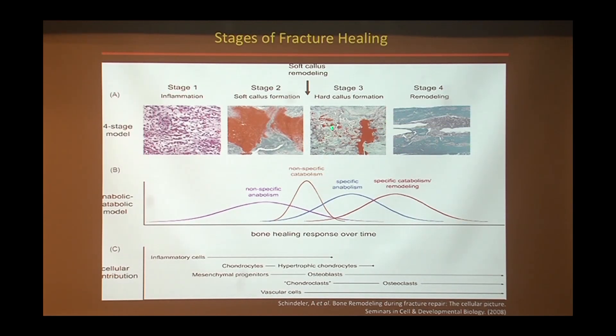This woven bone, which resembles the spongy bone at the end of your long bone, eventually gets remodeled into cortical bone, just like it does in development. Unless you are very skilled at radiography or looking at an X-ray, you won't even be able to see where the fracture has healed — it will be indistinguishable from the native tissue in both form and function.